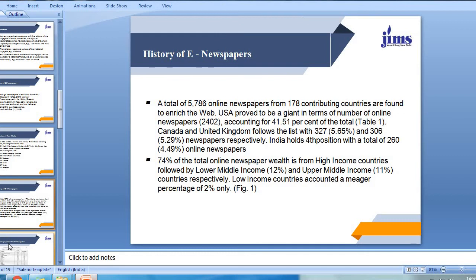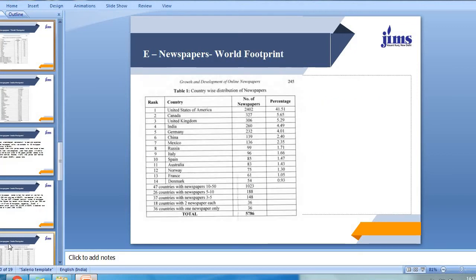A total of 5,786 online newspapers from 178 contributing countries are found to enrich the web. The U.S. proved to be a giant in terms of number of online newspapers, with 2,402, accounting for 41.51% of the total. Canada and United Kingdom follow the list with 327 (5.65%) and 306 (5.29%) newspapers respectively. India holds fourth position with a total of 216, or 4.49% of online newspapers. Now, 74% of the total online newspaper wealth is from high income countries, followed by low middle income at 12% and upper middle income at 11% respectively. Low income countries accounted for a meager 2%.